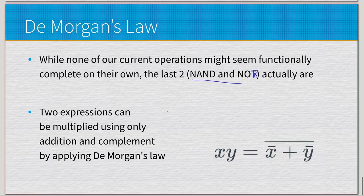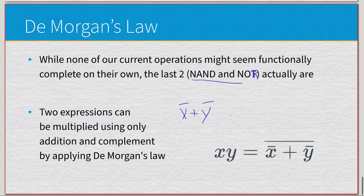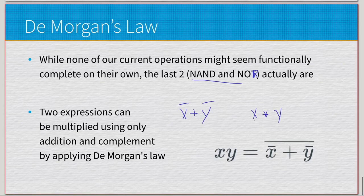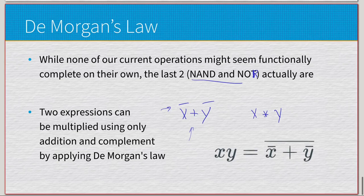To get multiplication from NOR: start with negated-x plus negated-y, then apply De Morgan's law — negate the individual elements and change addition to multiplication — and we get x times y. We already have complement from NOR, and we have addition from NOR. Using De Morgan's law we now get multiplication too. So through NOR alone we have access to complement, addition, and multiplication — a functionally complete system.